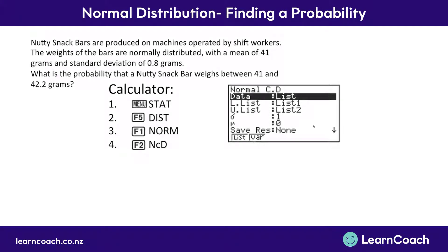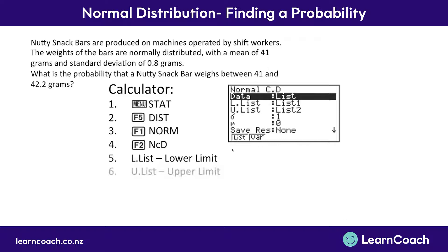Once you're in NCD you're going to get a screen that looks something like this — it will vary depending on what version of the calculator you have, but the principles remain the same. You need to input your data. The first piece of data is your lower limit, which in this case is 41 grams — that's the lightest weight we want. The upper limit is 42.2 grams.